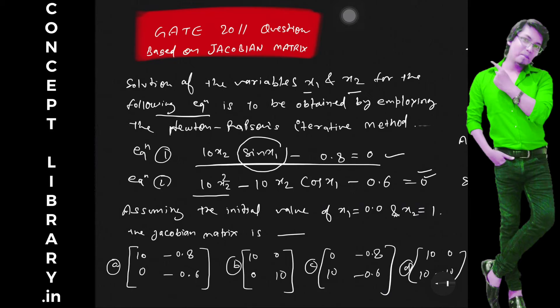We have two equations and we have to obtain by employing the Newton-Raphson iterative method. Assuming the initial value of x1 is this and x2 is this, so we have to find out the Jacobian matrix.